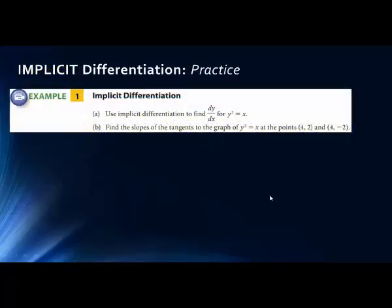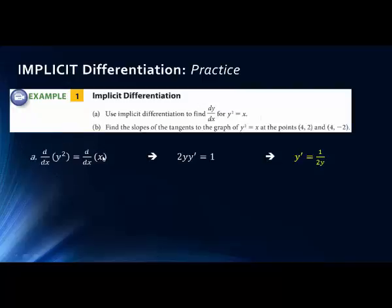Let's do a couple of examples. First, we're trying to find the derivative y prime for y squared equals x. We take the derivative of both sides: the derivative of the left side is 2y, and then we add on the y prime. The derivative of x is simply 1. We're solving for y prime, so we divide both sides by 2y, and we get the final answer.